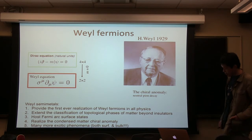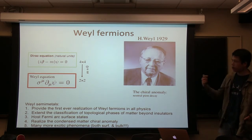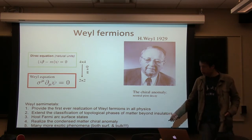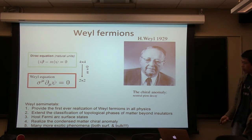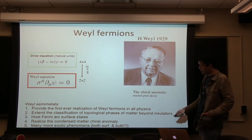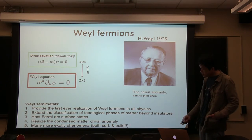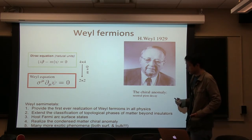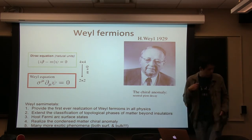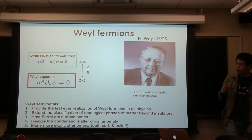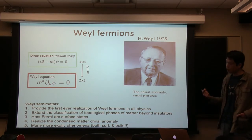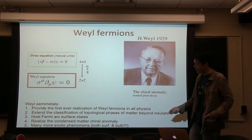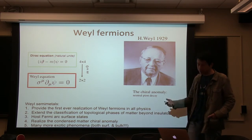In contrast to a topological insulator, where only the surface states — the Dirac surface states — are the desired interesting thing and one wants to get rid of the bulk, here in the Weyl semimetal both the surface and the bulk are interesting. In the bulk we have the Weyl fermions, and on the surface there are these Fermi arc surface states. This really opens up research opportunities for both bulk-sensitive probes like transport and surface-sensitive probes such as ARPES and STM.